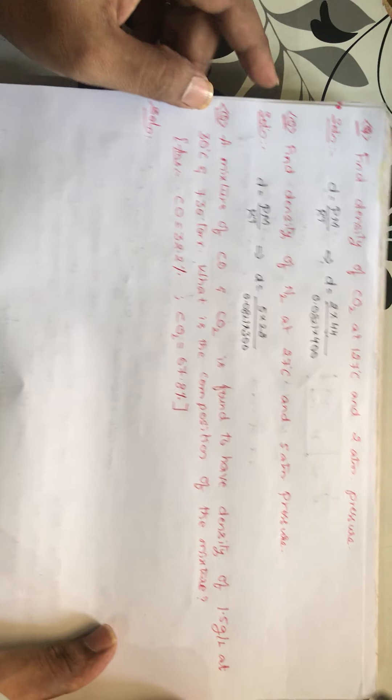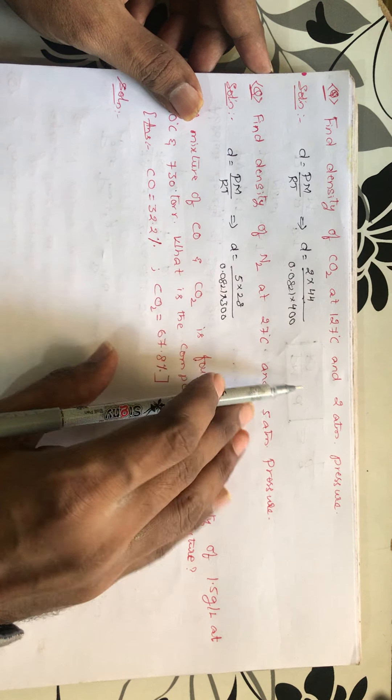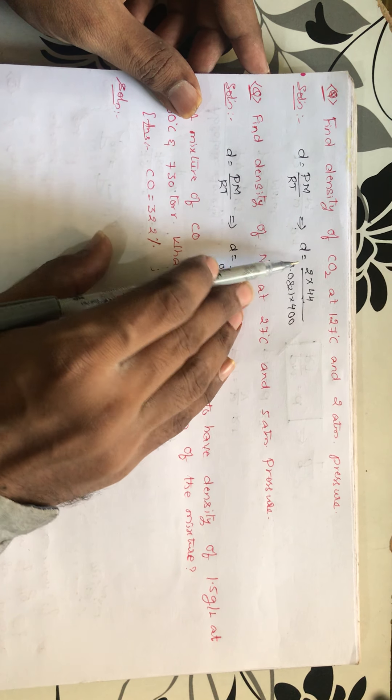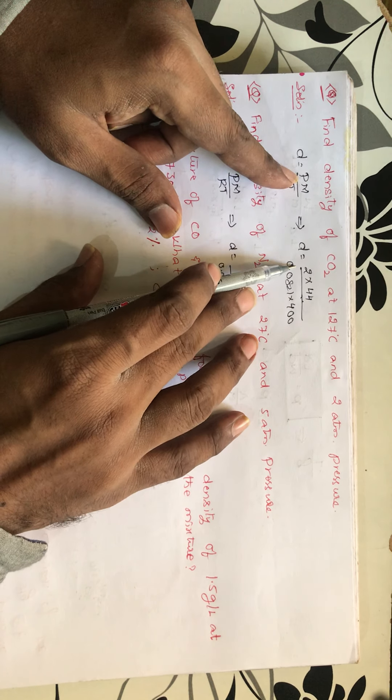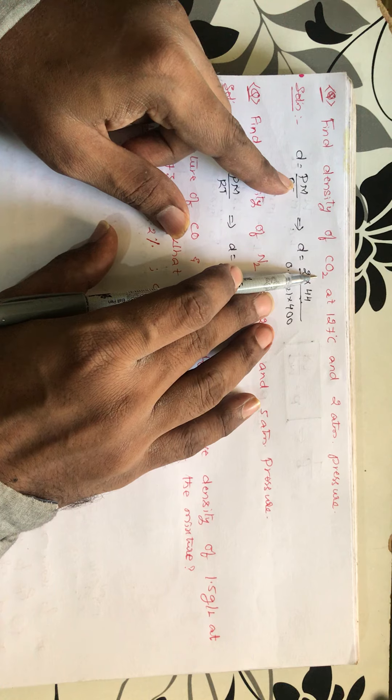Find the density of CO2 at 127 degrees centigrade and 2 atmospheric pressures. Density is PM by RT. Now he is mentioning pressure at 2 atmospheres. And molecular weight of CO2 is 12 plus 32, so it is 44 totally.